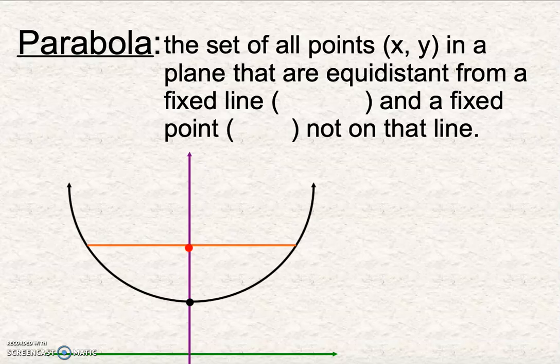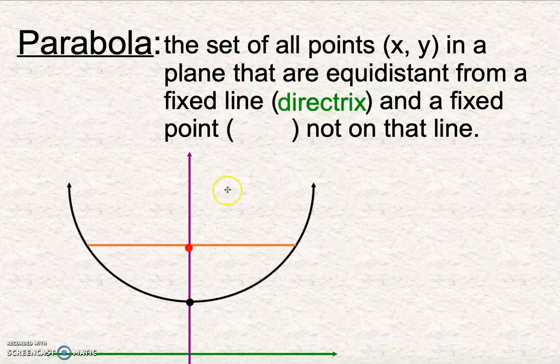So let's define a parabola geometrically, not algebraically as a quadratic, but geometrically. Our geometric definition of a parabola is it's a set of all points (x, y) in a plane, just meaning it's flat, that are equidistant. And that means the same distance from a fixed line, and that's this green line down here, and that's called the directrix. And a fixed point, and that fixed point is this red point right here, and that's called the focus that's not on the line.